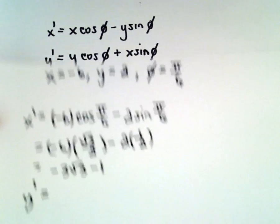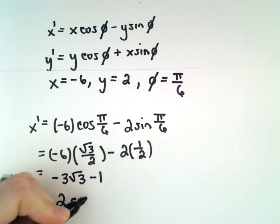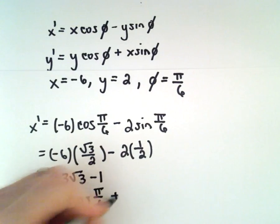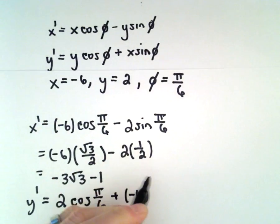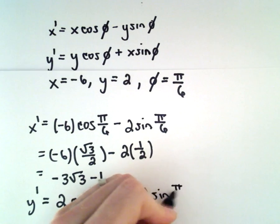To get y', we use the formula: the y value, which is 2, times cosine of π/6, plus the x coordinate, which is -6, times sine of π/6.